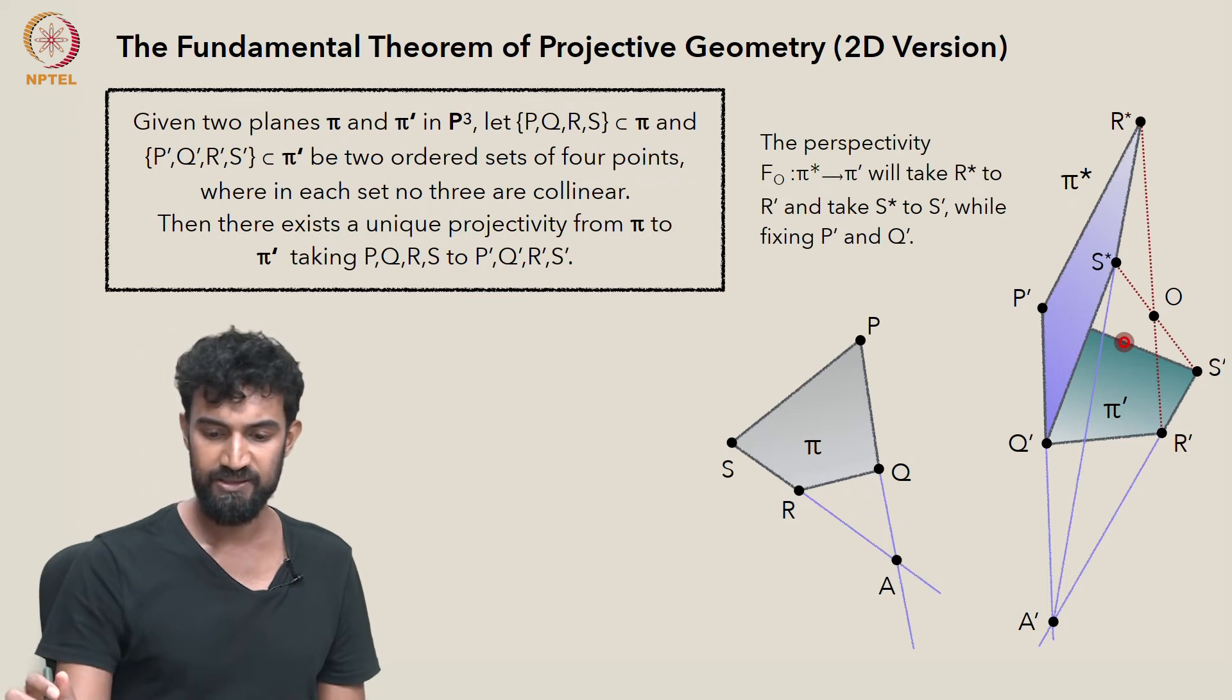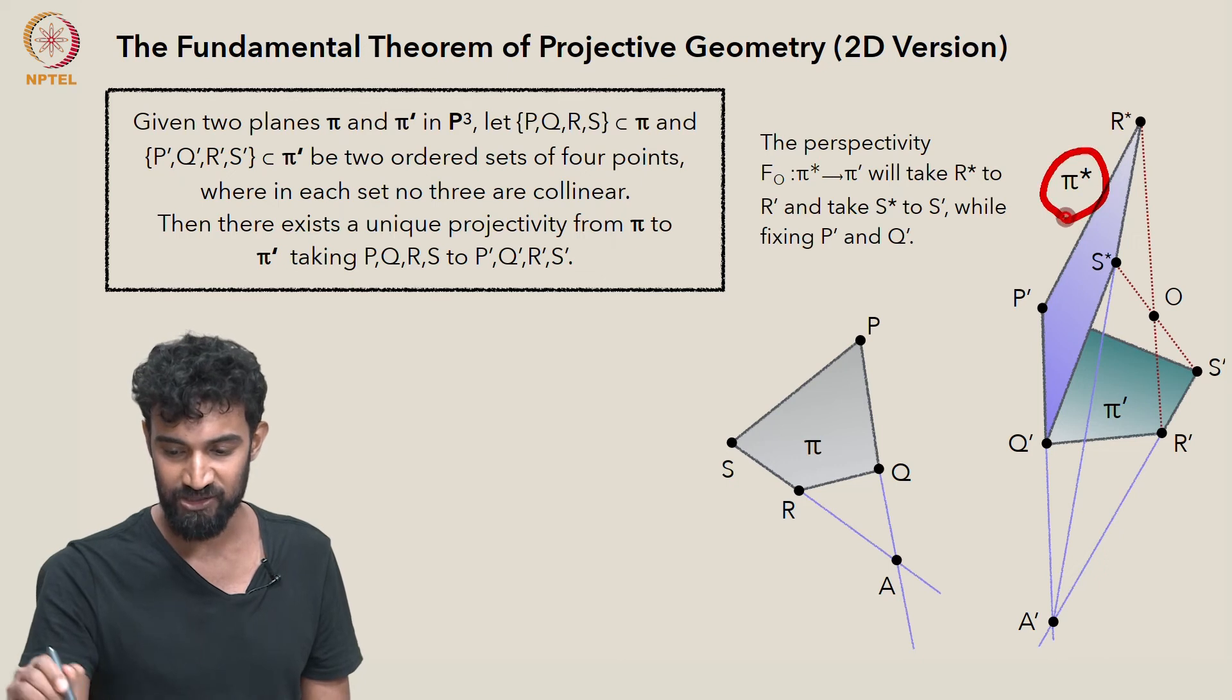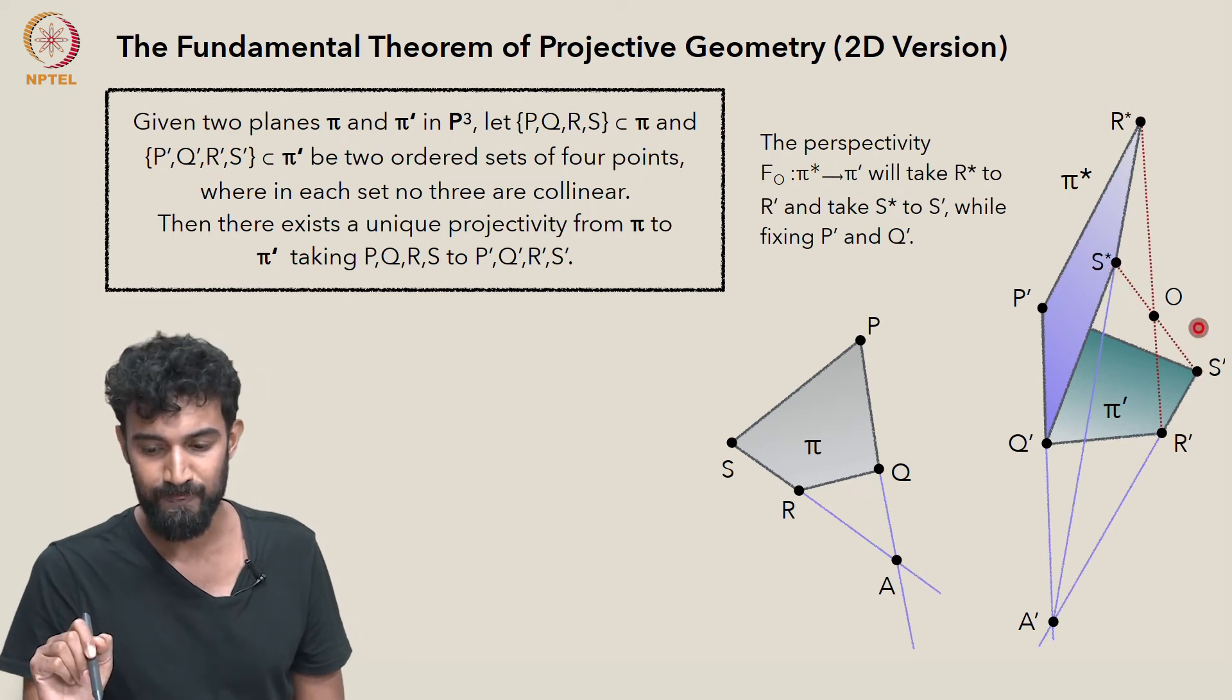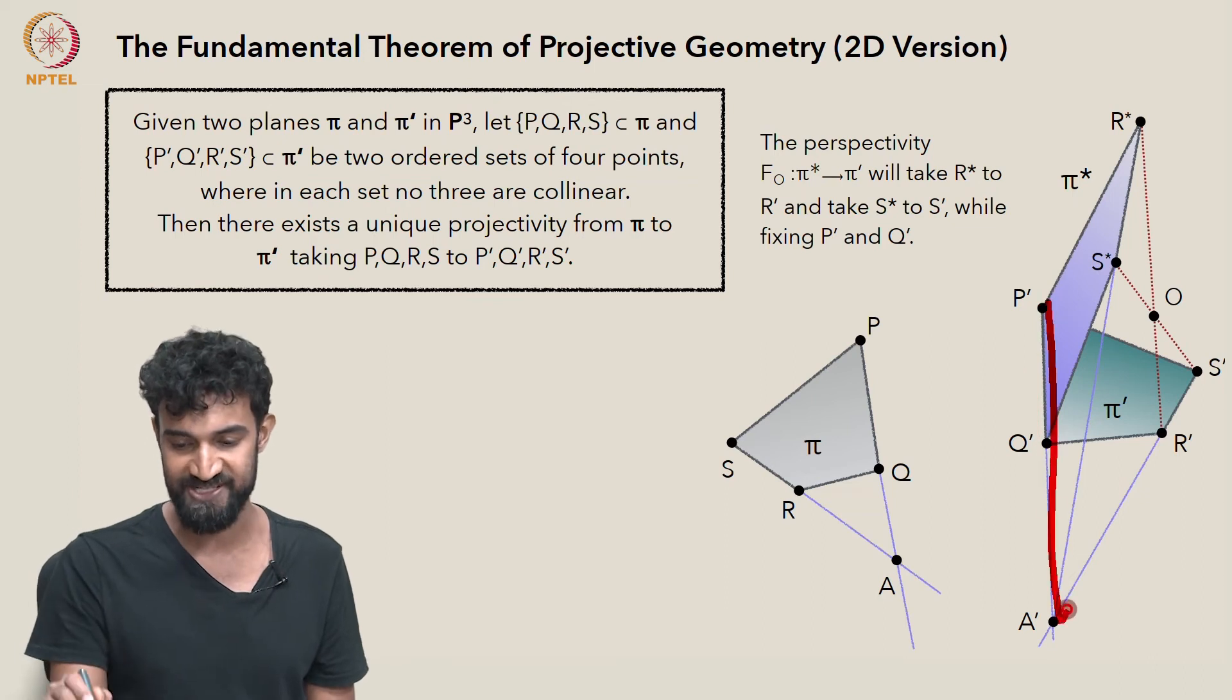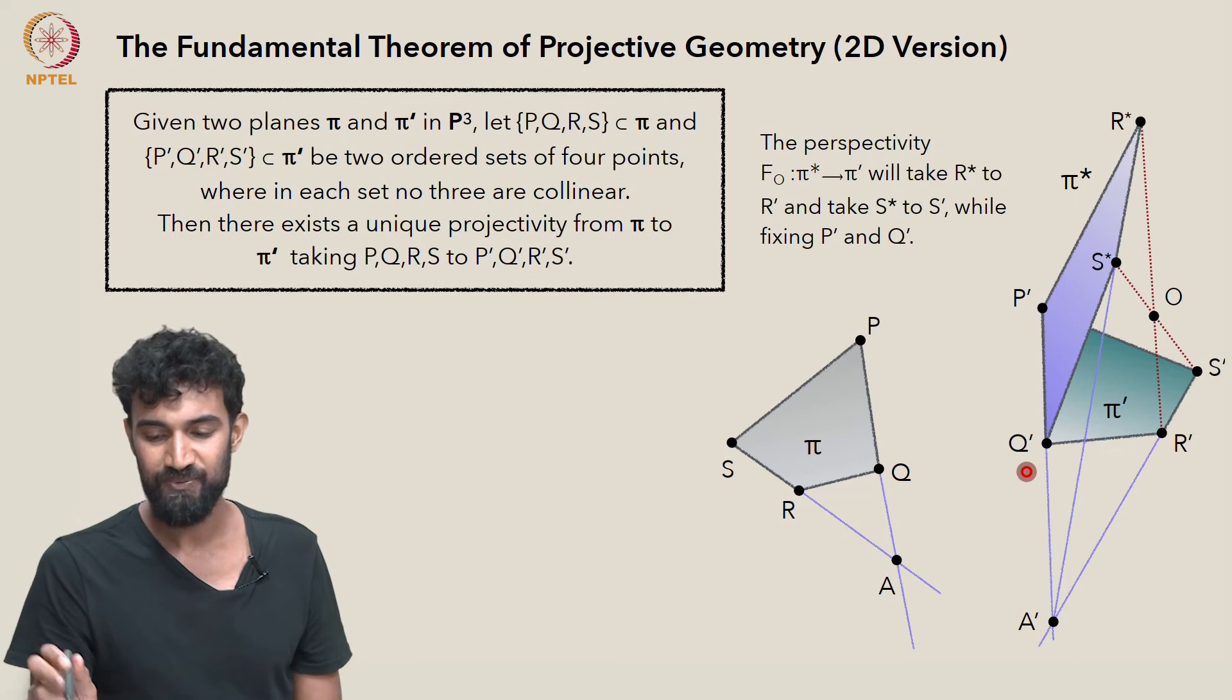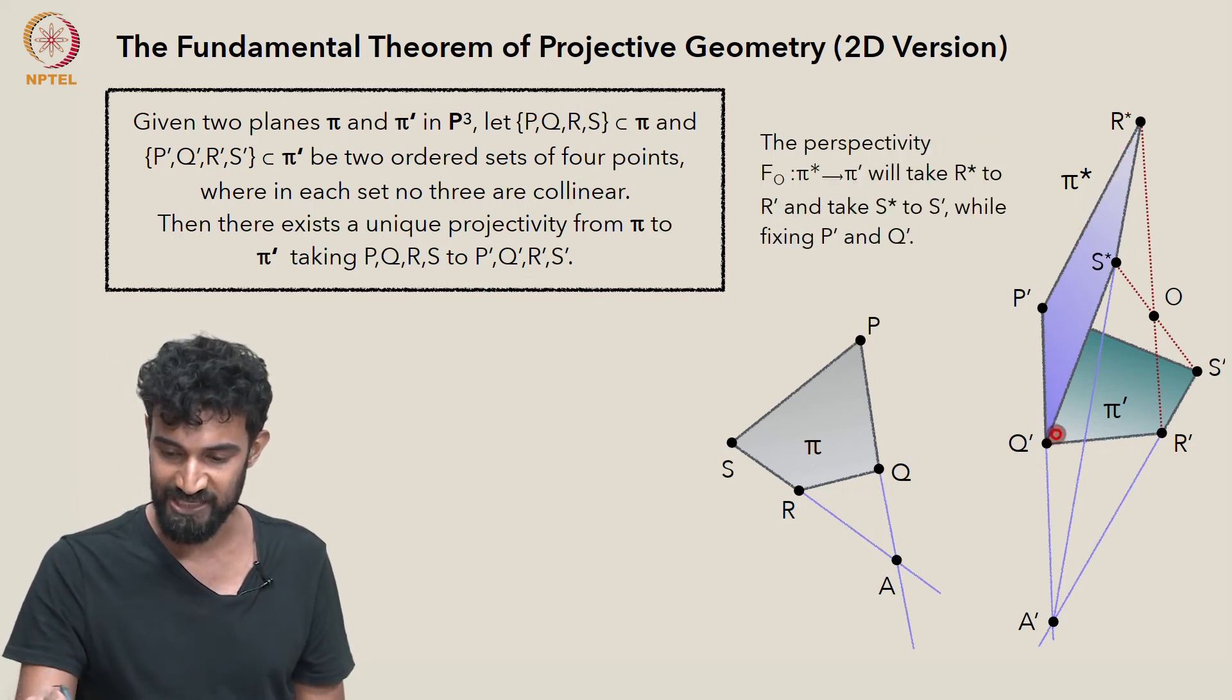We can look at the perspectivity centered at O from the plane π star to the plane π prime. That's guaranteed to take R star to R prime. It's going to take S star to S prime, but it's also going to fix everything on the intersection between these planes. It's going to fix P prime. It's going to fix Q prime. So all in all, it's actually taking this quadrilateral down to this quadrilateral.